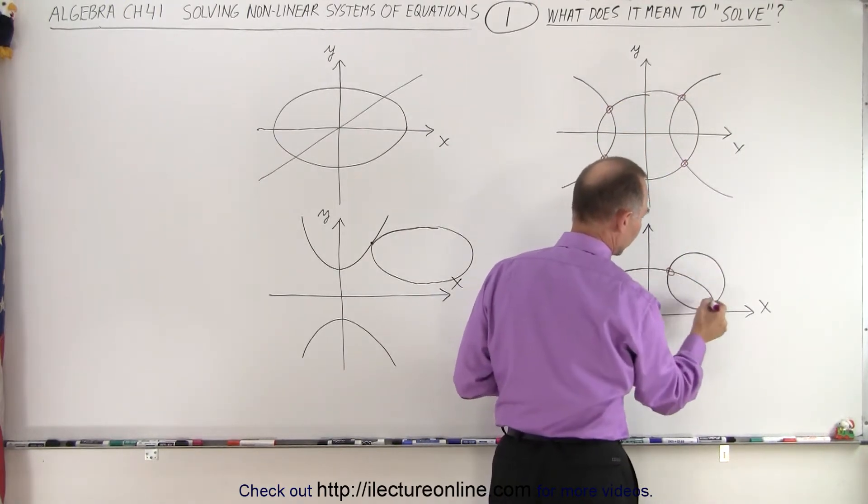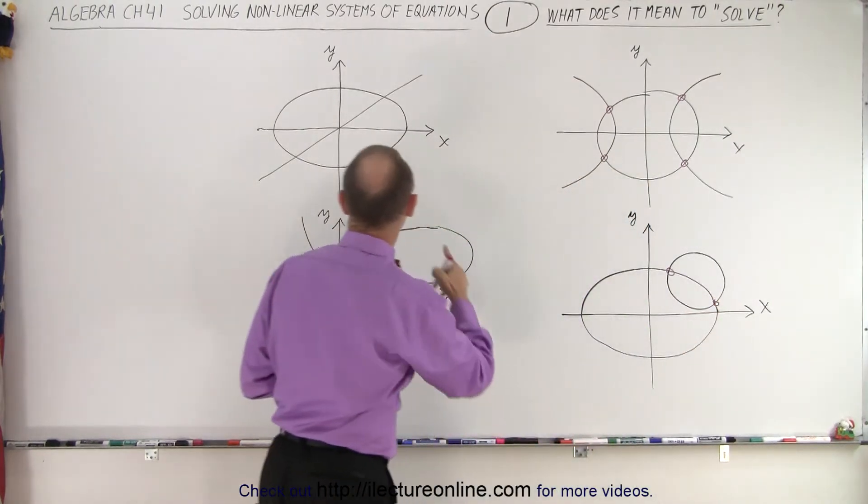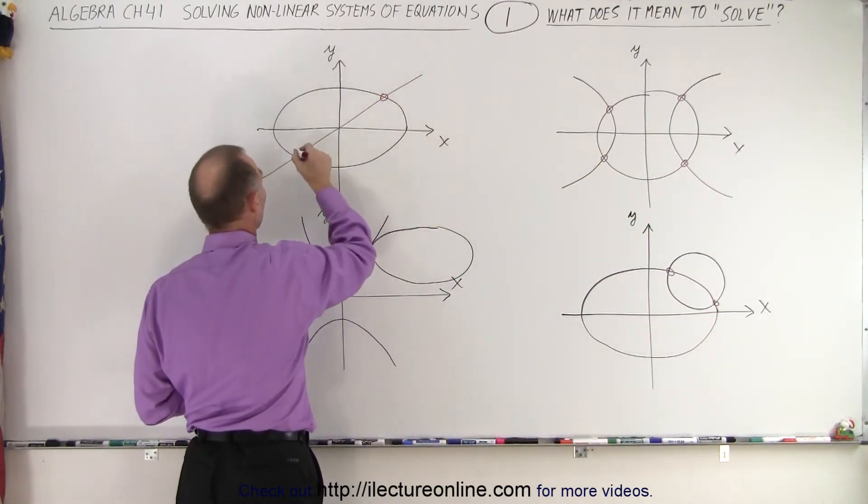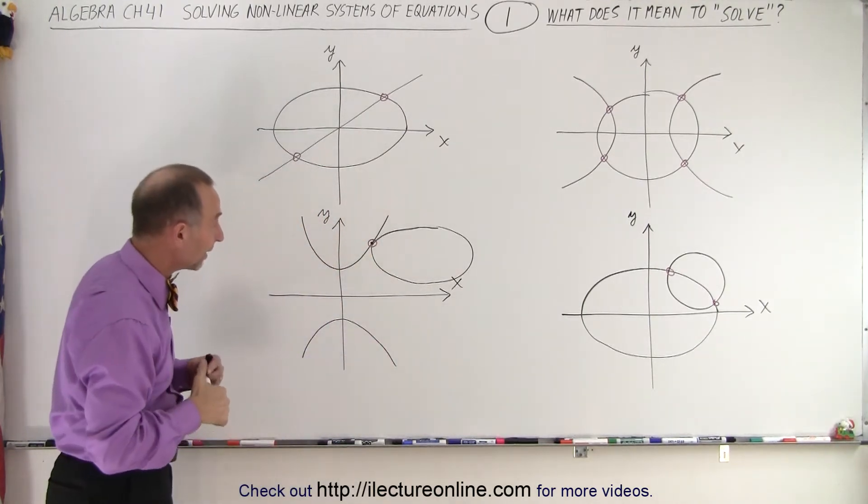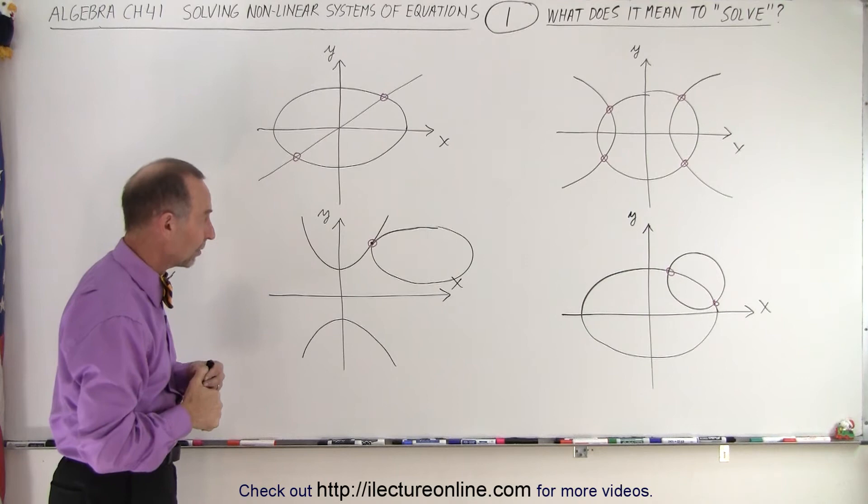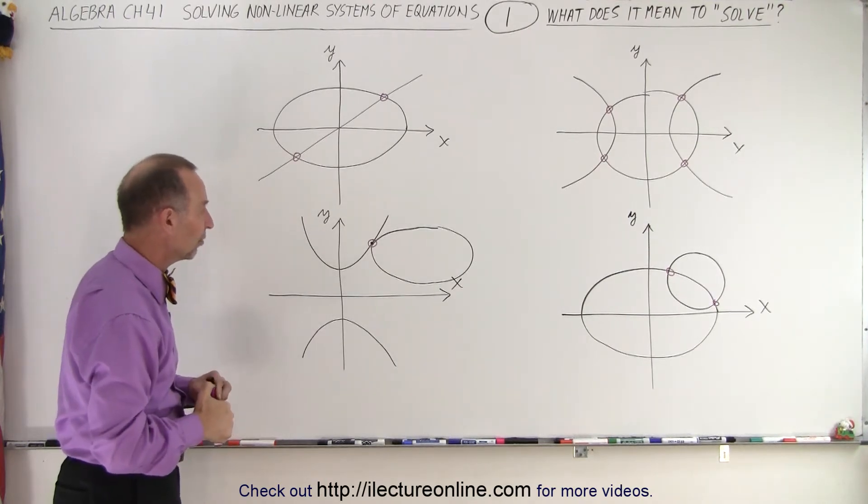In this case we have two intersections right there. In this case we have two intersections, and in this case we have one intersection, one place where they meet at the same location on the x-y coordinate system.